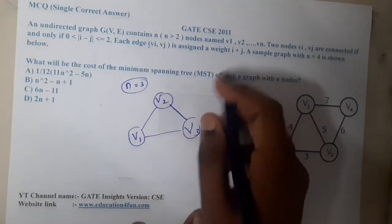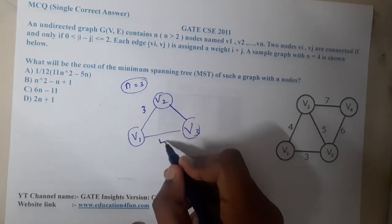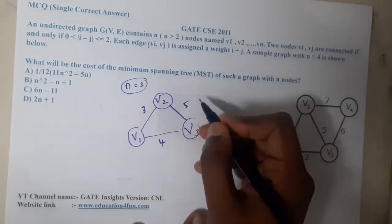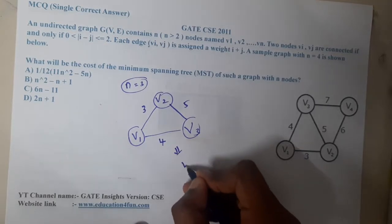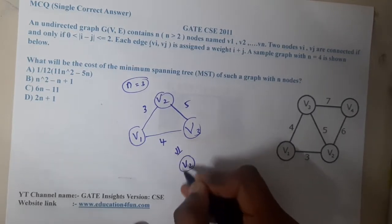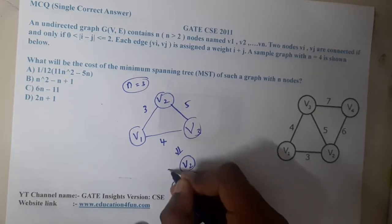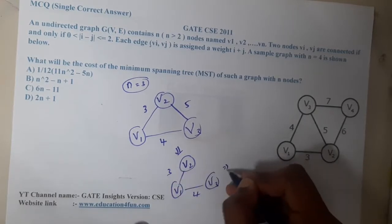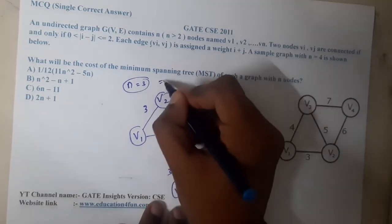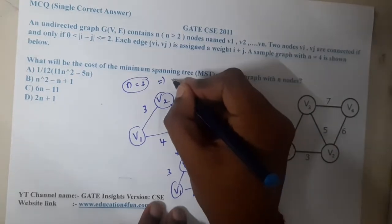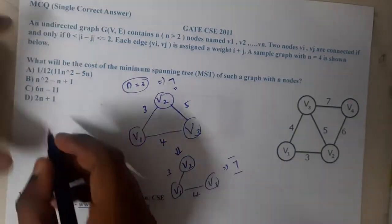The cost is i plus j, so the edge cost for v1-v2 is 3, for v1-v3 it is 4, and for v2-v3 it is 5. Drawing the minimum spanning tree, we take edges with cost 3 and 4, giving a total cost of 7. So for n equal to 3, the MST cost should be 7.